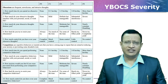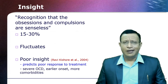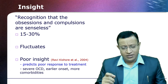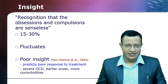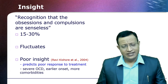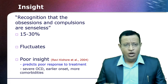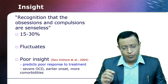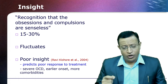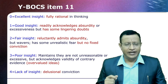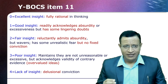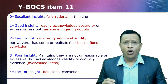Moving to insight into the illness. Insight means recognizing that obsessions and compulsions are senseless, unwanted, and absurd thoughts and actions. If the patient is able to say that, insight is present. 15 to 30 percent of patients do not have insight — they believe these symptoms are very important. Insight also fluctuates in the same patient across time. Poor insight is common in 15 to 30 percent, and it is a poor predictor of response to treatment, associated with severe OCD, and patients may not cooperate with cognitive behavioral therapy. The Y-BOCS item 11 assesses insight: 0 means excellent insight, 1 good, 2 fair, 3 poor, and 4 is lack of insight — almost delusional conviction.